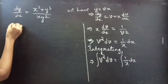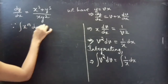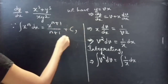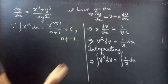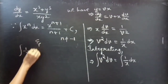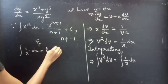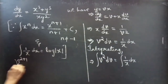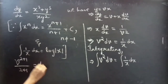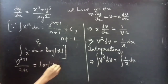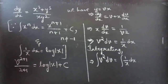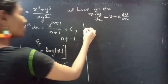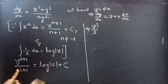We know that ∫xⁿ dx = x^(n+1)/(n+1) + C for n ≠ −1, and ∫(1/x) dx = log|x|. Applying these: v^(2+1)/(2+1) = log|x| + C, which gives v³/3 = log|x| + C.